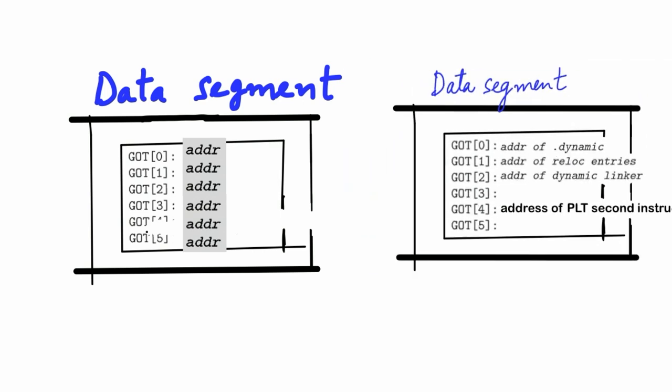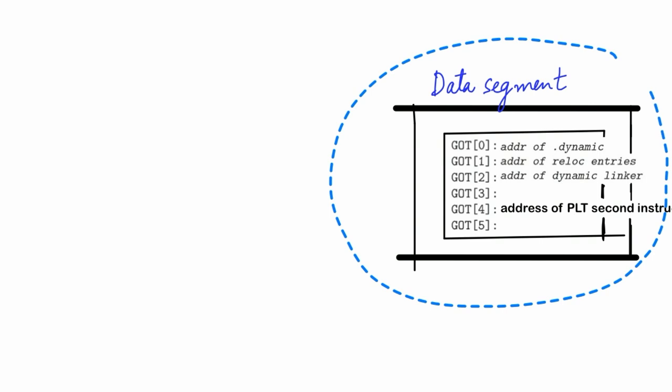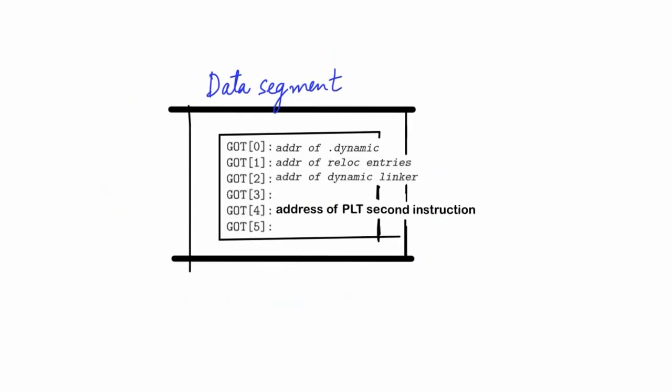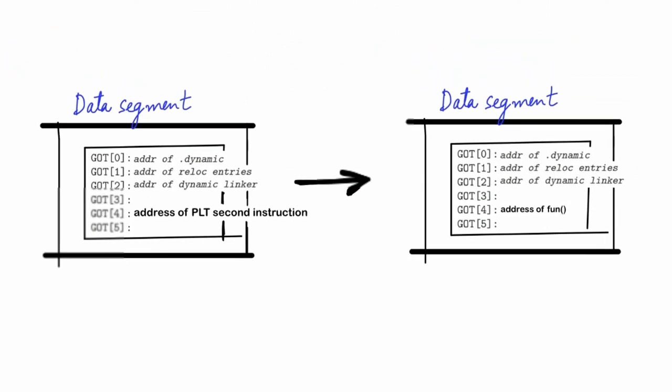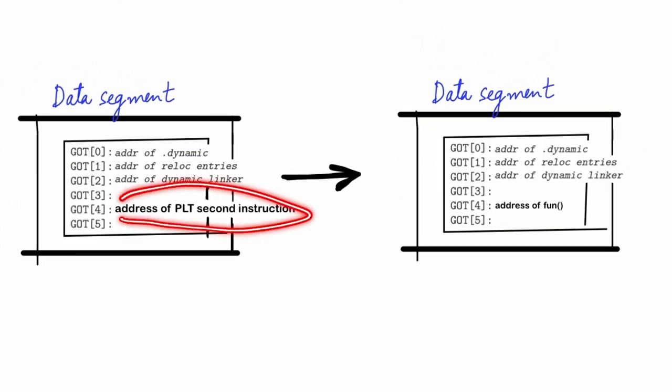If you observe the first three rows, which are exclusively reserved for dynamic linker, these entries play a crucial role in loading the dynamic linker. The fourth index here holds our function 'fun', which we use later for examination. The initial value here points to the second entry in the PLT entry for the same function 'fun'. The significance of this will become more clear soon.